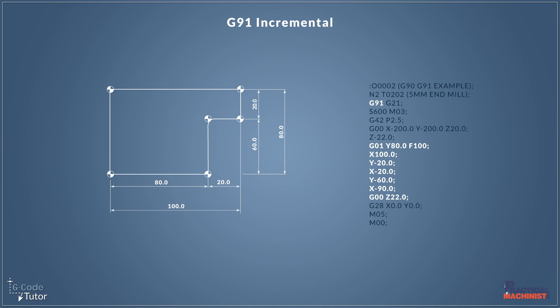And as you can see from this slide, G91 incremental looks quite a lot different when we're programming incremental than it does in absolute, so we must be very careful not to get these two confused as we are programming, especially if we're switching between the two.